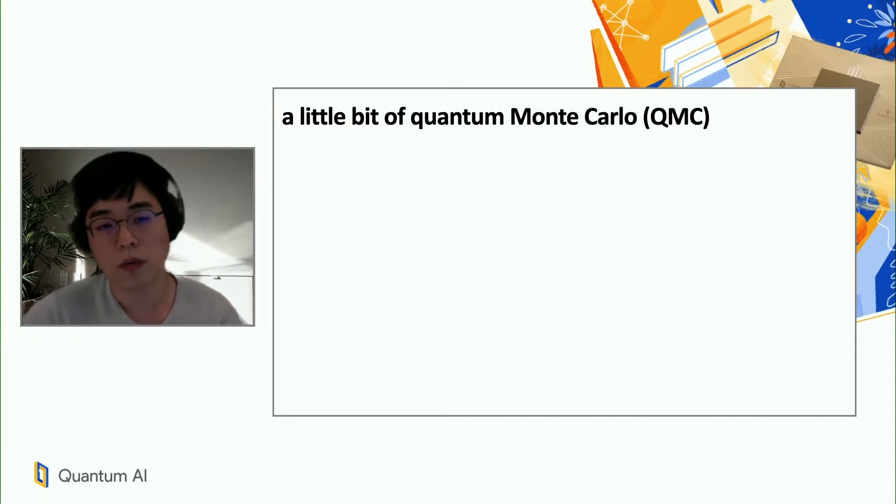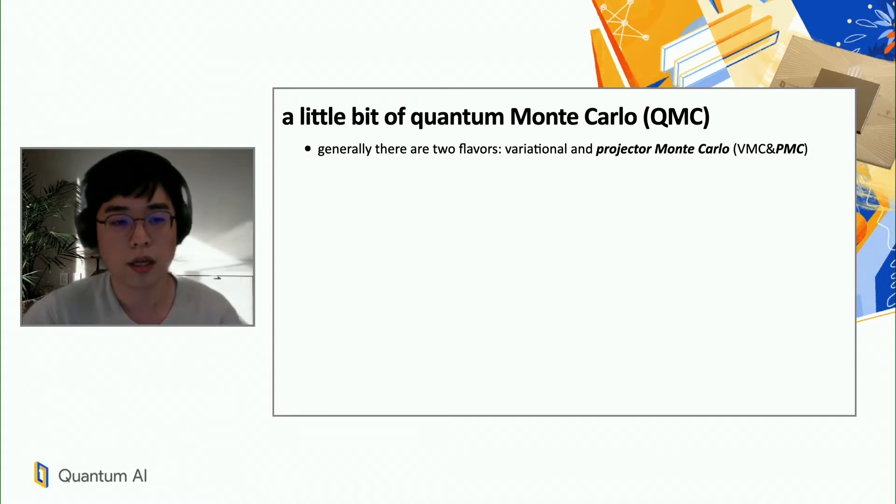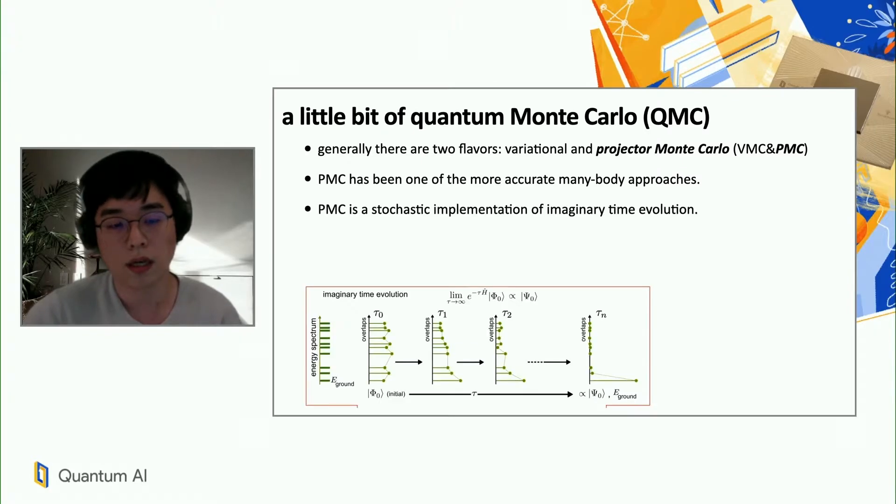I also have to tell you a little bit about quantum Monte Carlo because this is going to be the key player today. There are generally two flavors of quantum Monte Carlo. One is variational and another is projector Monte Carlo. It is the PMC that we're going to talk about today, and PMC has been one of the more accurate many-body approaches. What PMC does is that it stochastically implements what is known as imaginary time evolution.